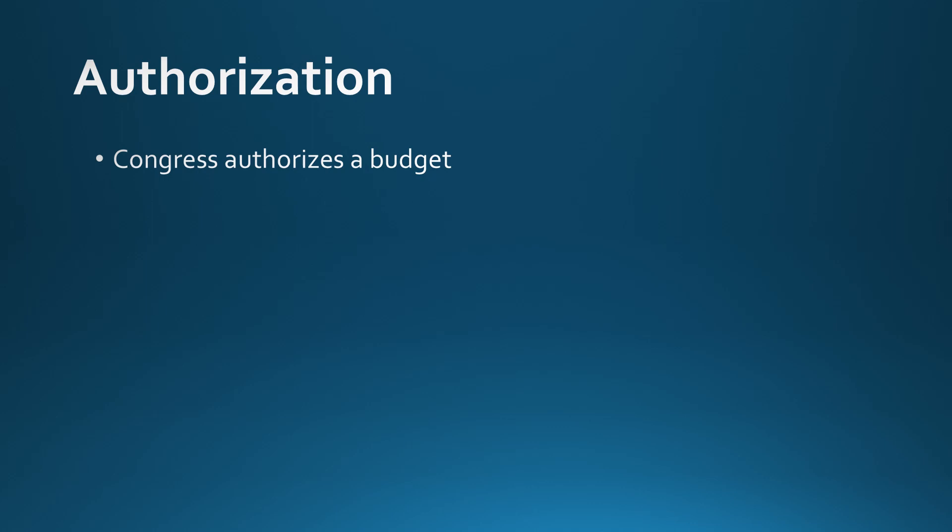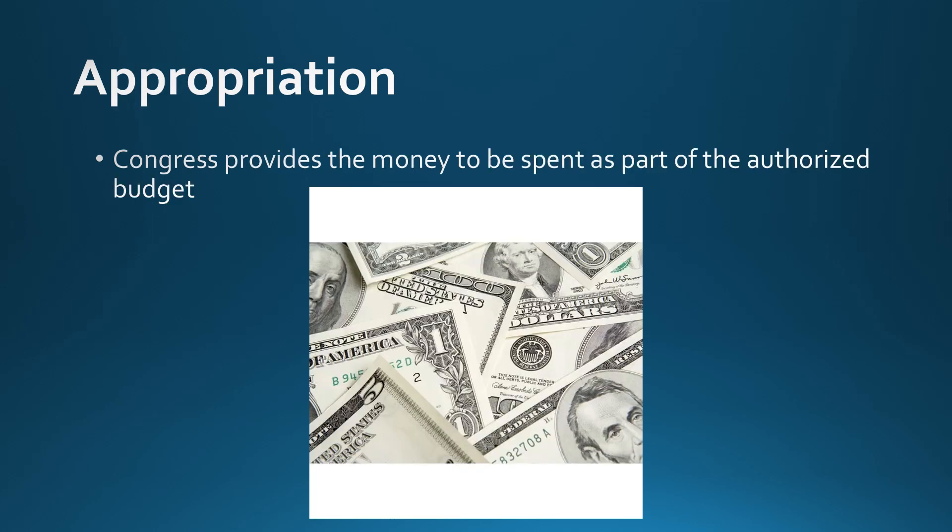Step two is appropriation. This is where Congress actually provides the money to be spent as part of what they had just authorized. Authorization was Congress saying money is allowed to be spent on something, but if they stop there the money isn't actually ever given, so it can't be spent. Appropriation is where they actually give the money to whomever needs it to spend as previously authorized.